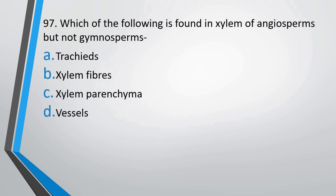Question number 97: Which of the following is found in the xylem of angiosperms but not in gymnosperms — tracheids, xylem fibers, xylem parenchyma, or vessels? The correct answer is option D, that is vessels.